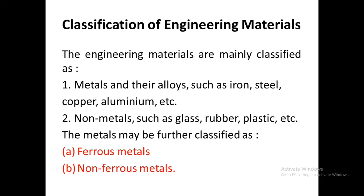There are different engineering materials used for manufacturing different machine components. They are mainly classified into two categories: metals and non-metals. Metals include iron, steel, copper, and aluminium. Non-metals include glass, rubber, and plastic.